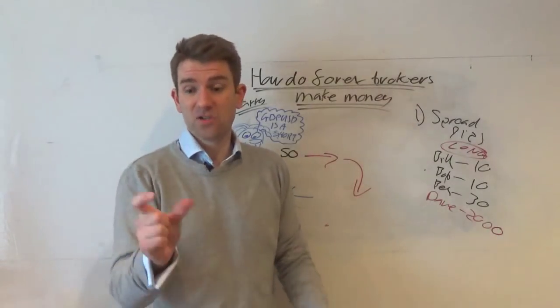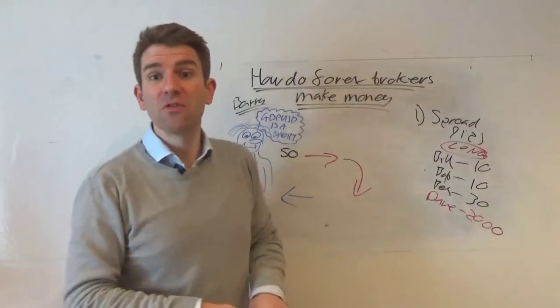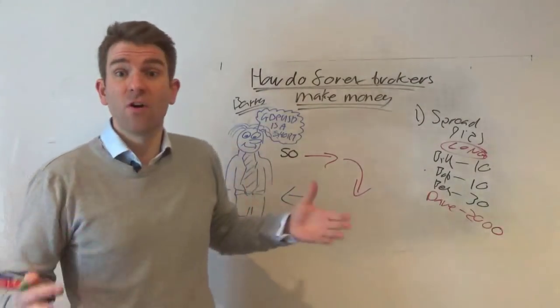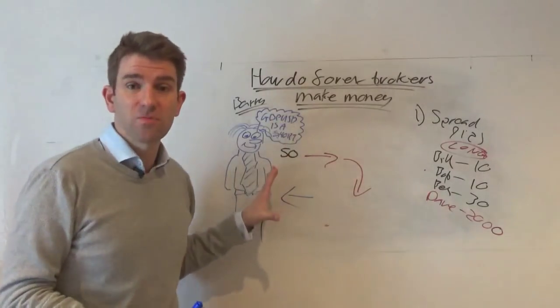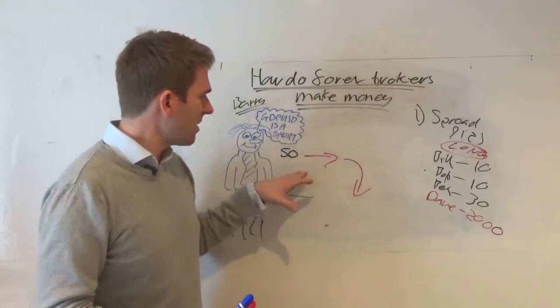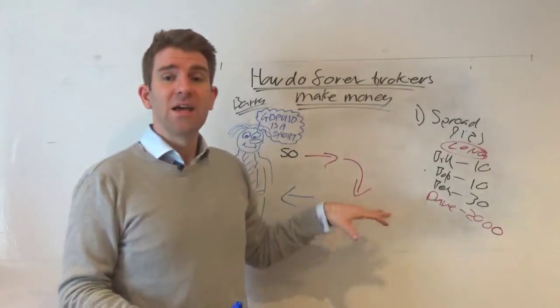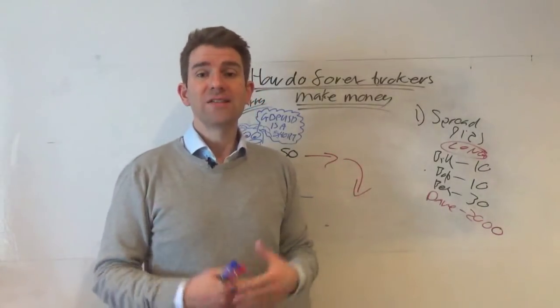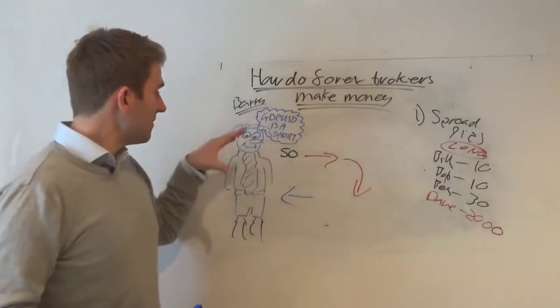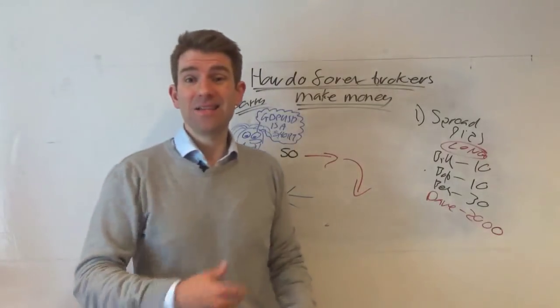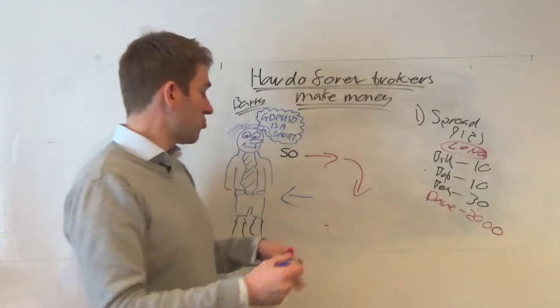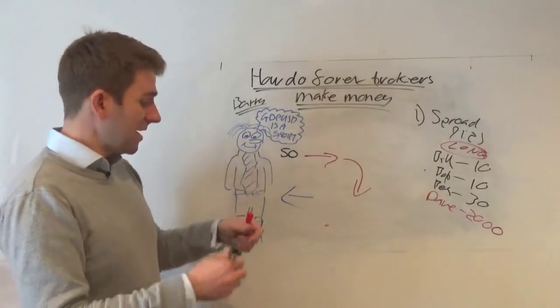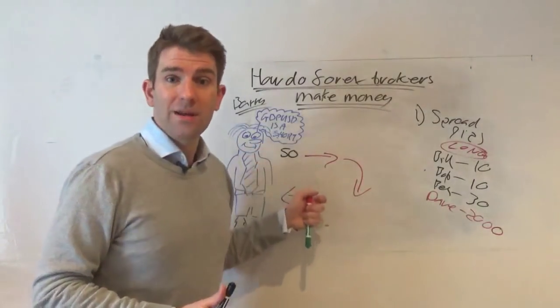Which is fine because he's got all the bells and whistles that go behind it. He's allowed to trade small size, but they'll go to the liquidity provider. They will offset that straight away. So they then have no risk in the trade. It's great for Barry because the broker's not hoping he loses. The broker, InterTrader in this example, is saying, you know what, we want Barry to win because it doesn't matter for us.